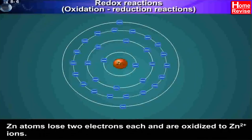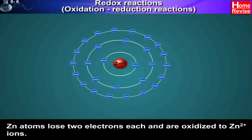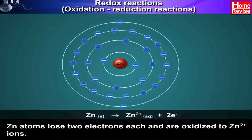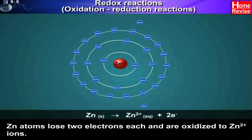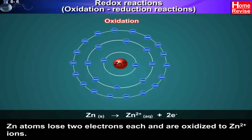Zn atoms lose two electrons each and are oxidized to Zn2+ ions. Zn gives Zn2+ plus two electrons. This is an oxidation reaction.